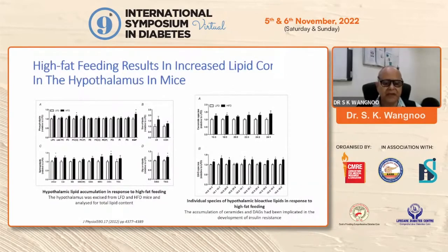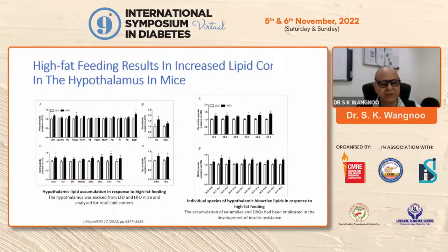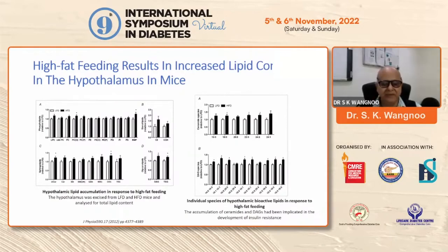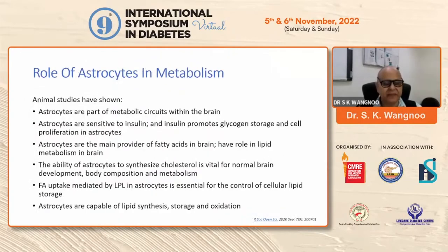There have been many animal experiments showing that in response to high-fat feeding in mice, there was increased lipid accumulation in the hypothalamus. When the hypothalamus was excised from the mice and analyzed for total lipid content, the hypothalamus was loaded with lipid content. Similarly, individual species of hypothalamic bioactive lipids in response to high-fat feeding were analyzed — the DAG species and various quartiles of hypothalamic bioactive lipids were characterized in response to high-fat feeding in experimental mice.